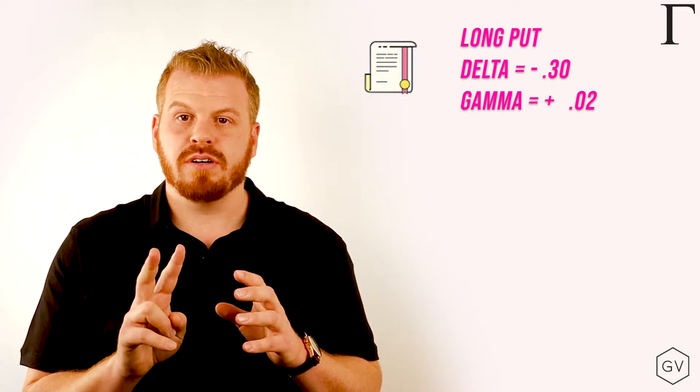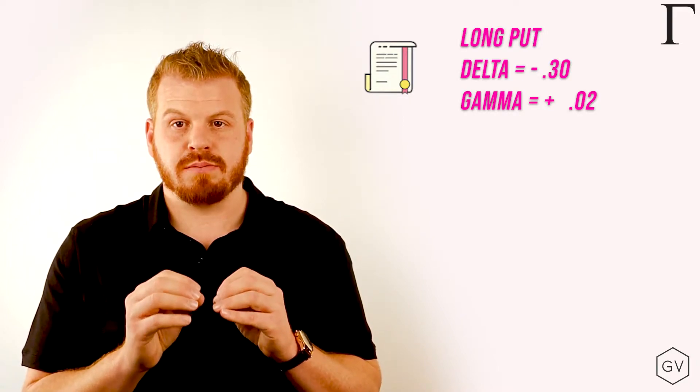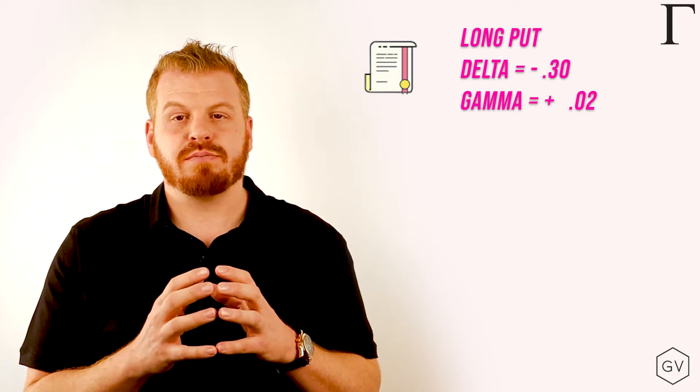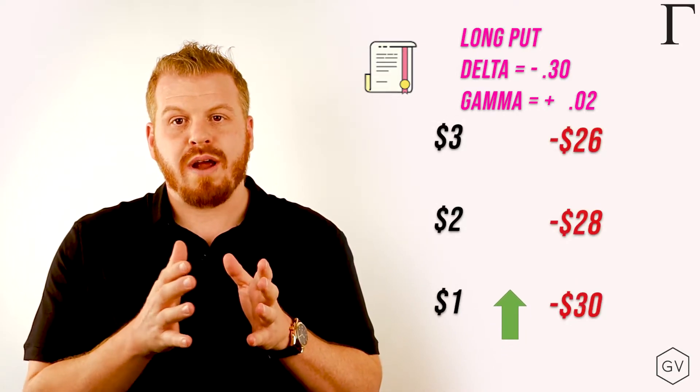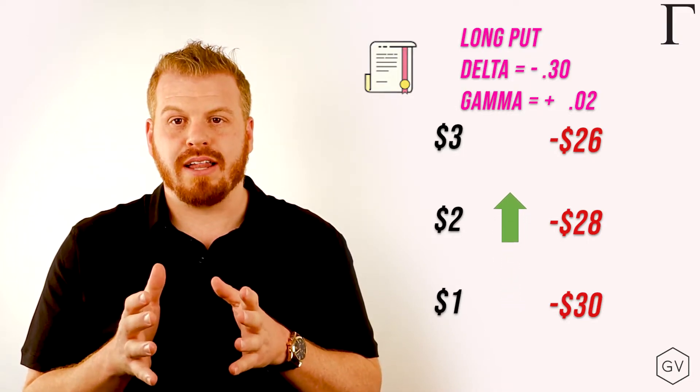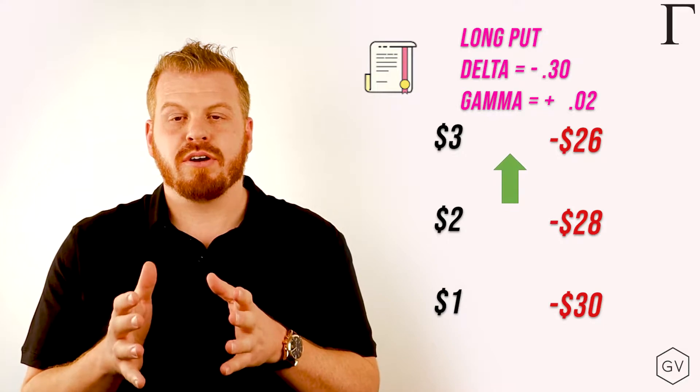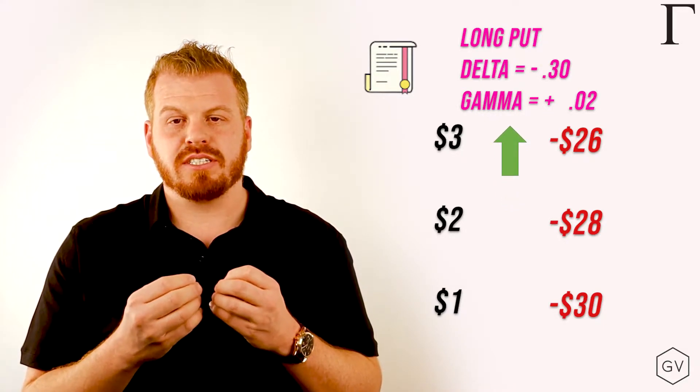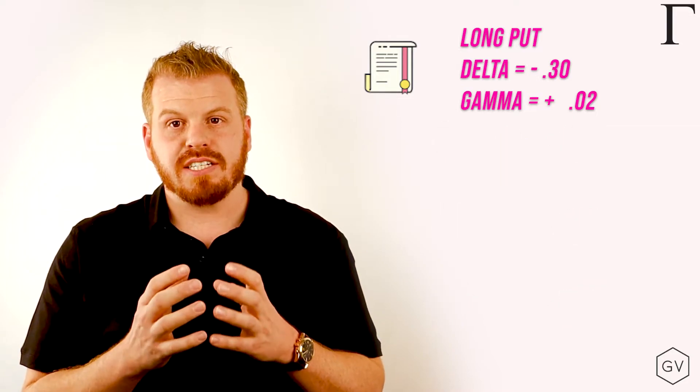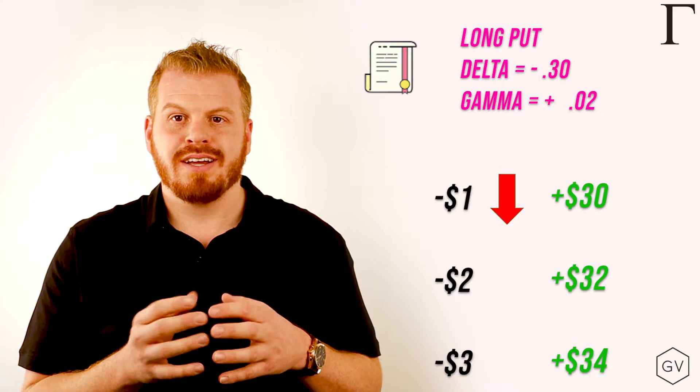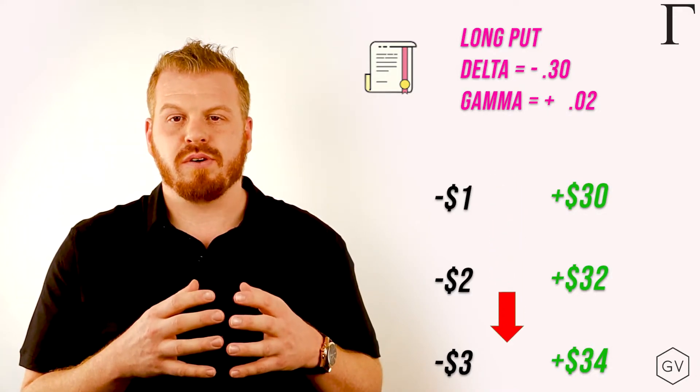Let's look at the same example with a put. If you own a put with a negative 30 delta and a gamma of 2, again, we'll hold gamma constant for simplicity, as the underlying rallies, you'll have less and less exposure. So the first rally in the underlying will lose you $30. The second round, the second point rally will lose you $28. The third, $26. So you get less and less exposure as the position is going against your put, vice versa on the way down. The first point down will earn you $30. The second point will earn you $32, so on and so forth.